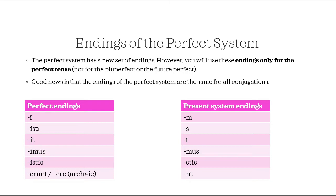Let us look at the endings of the perfect tense. Good news is that you don't have to study a lot of new endings — there is just one set of personal endings to study. The perfect stem has a new set of endings; however, you will use these endings only for the perfect tense, not for the pluperfect or the future perfect, because those are formed in another way. Good news is that the endings of the perfect system are the same for all the conjugations, so you won't have to worry about recognizing the right theme vowel. The perfect endings are: -i, -isti, -it, -imus, -istis, -erunt.